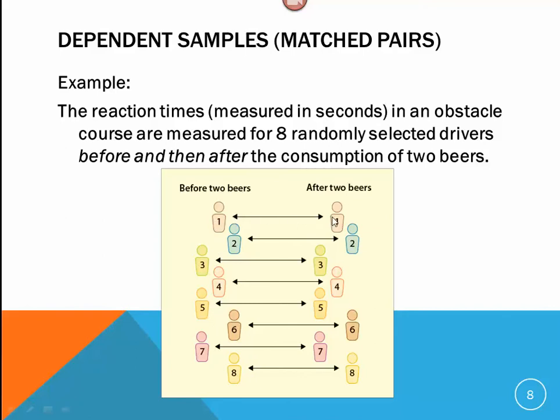And this is an example of a dependent where we've made matched pairs, because we're not dealing with different people. Here, we avoid the idea, the objections that might be like, well, it's possible that the people with two beers were just worse drivers, right? If we're talking about two separate populations. And so, by matching it up with the same person, we're avoiding that sort of accusation.